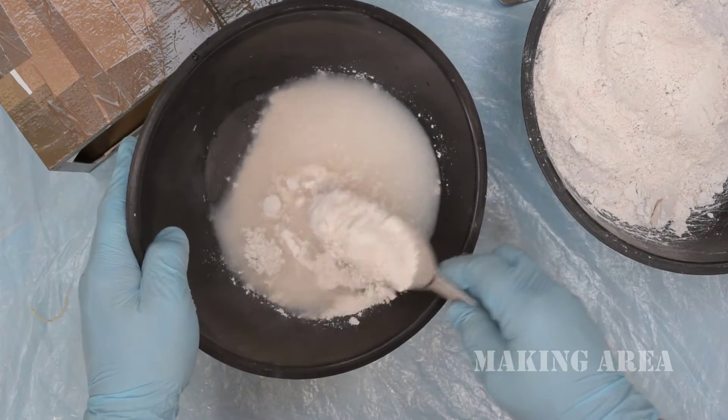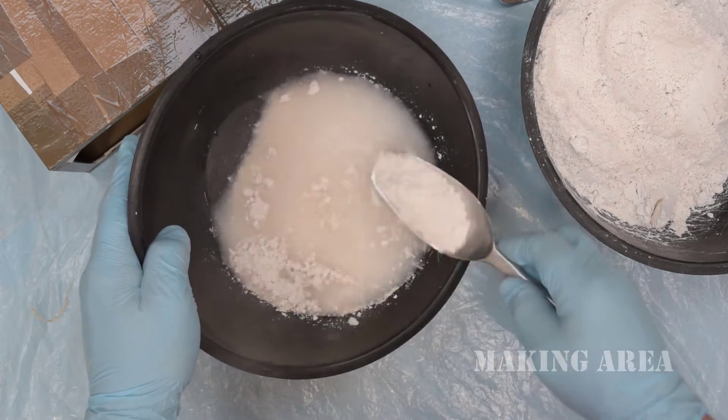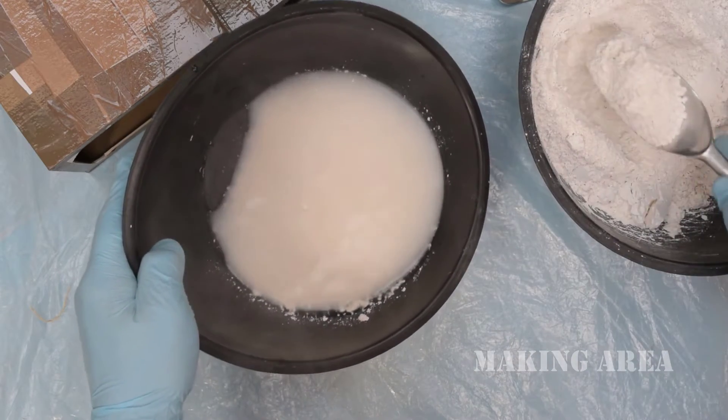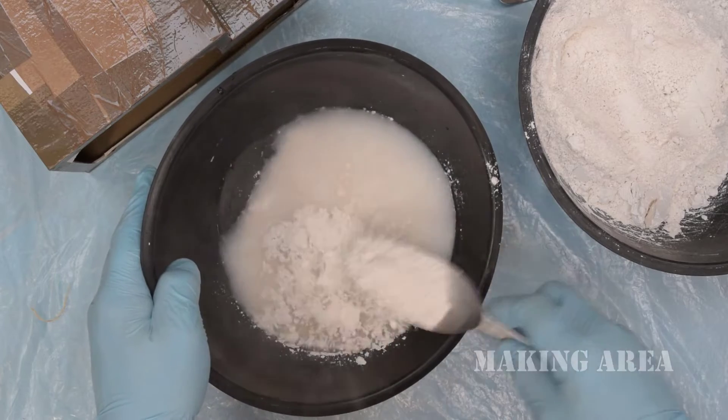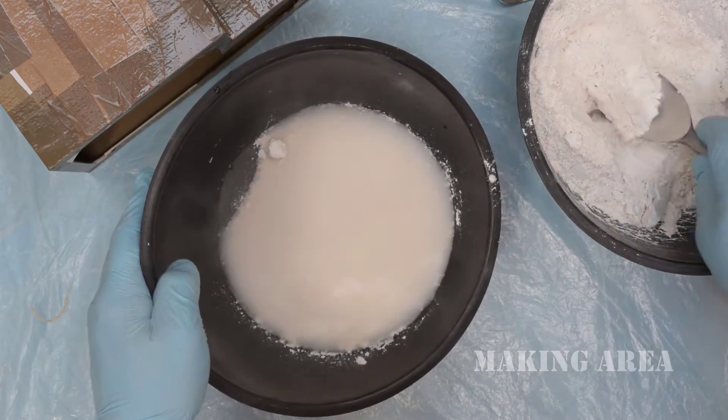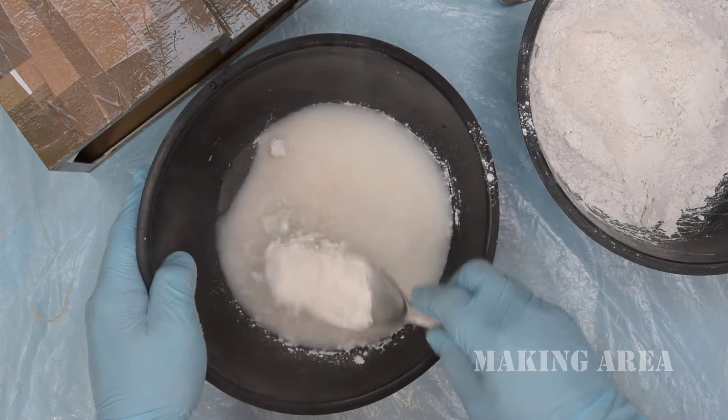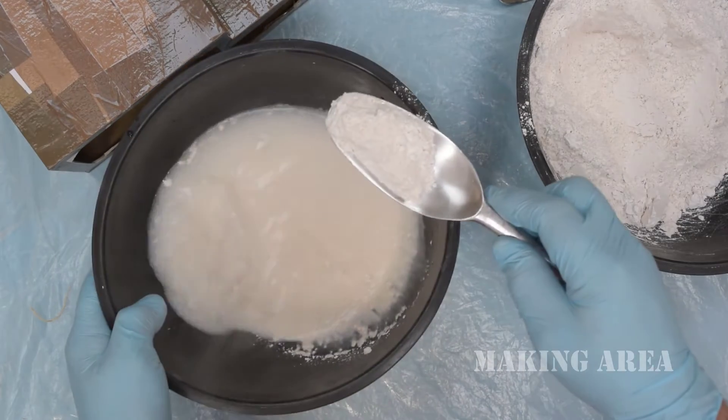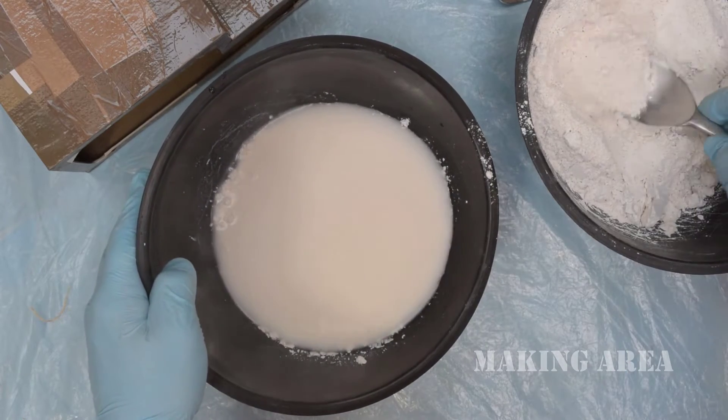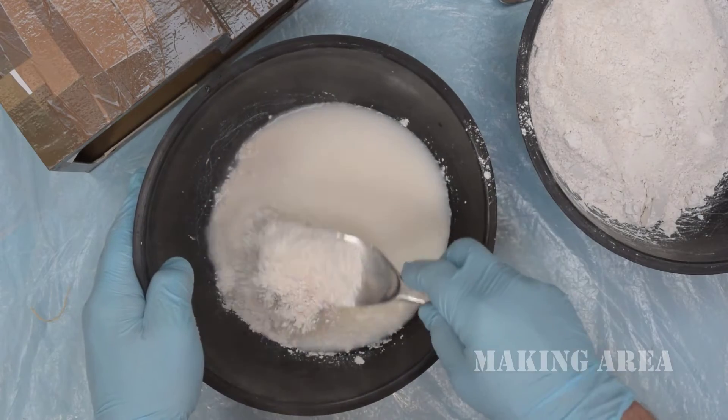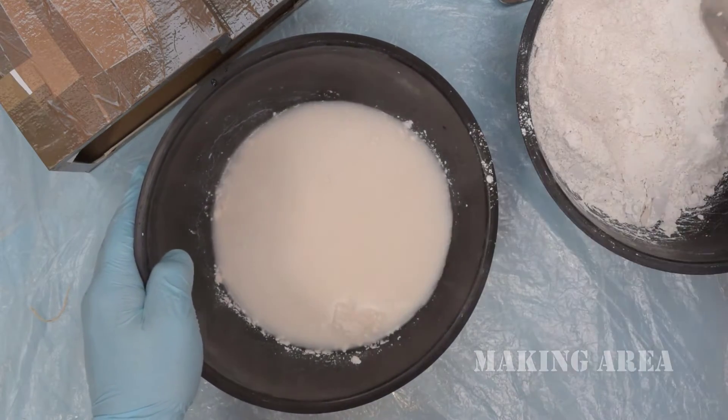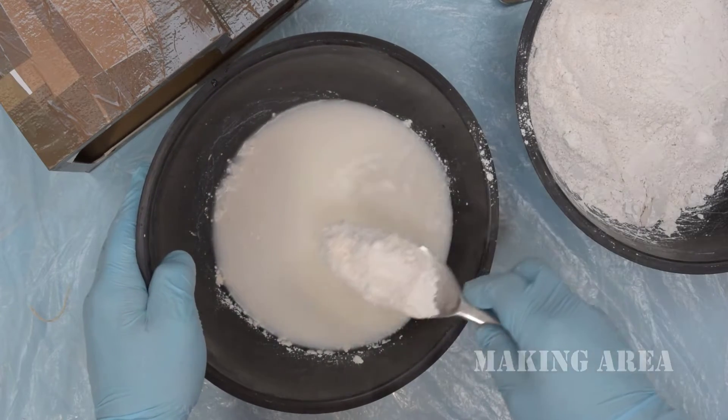I'm now just going to sprinkle the plaster over the surface of the water. As you may see, the plaster is just simply dropping to the bottom of the bowl.